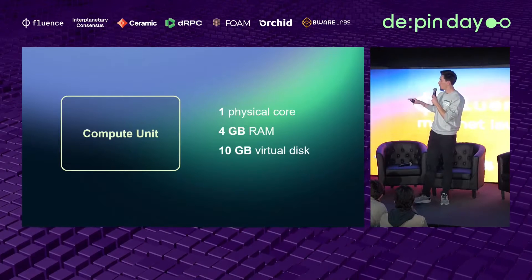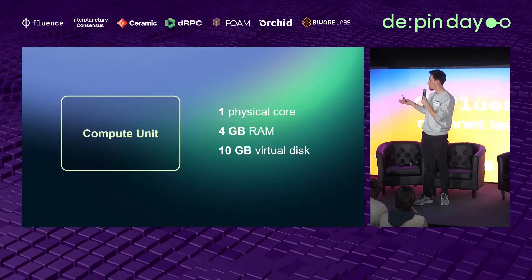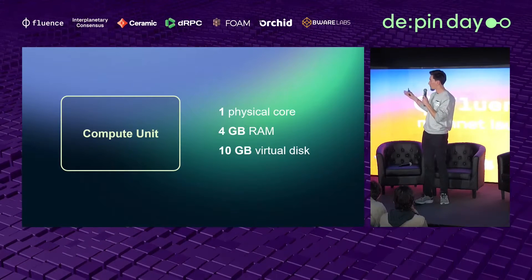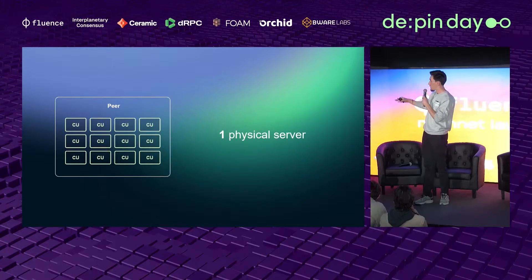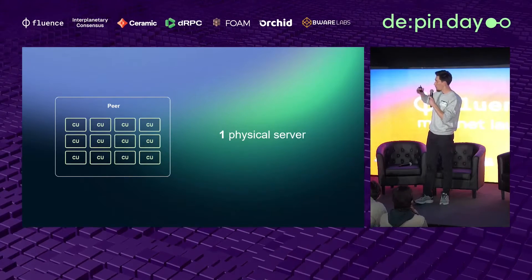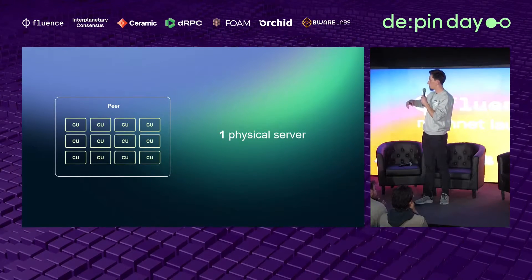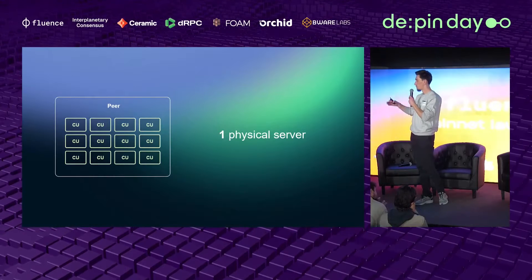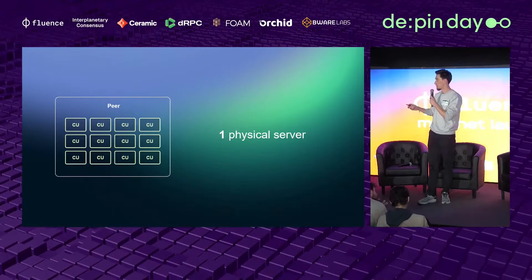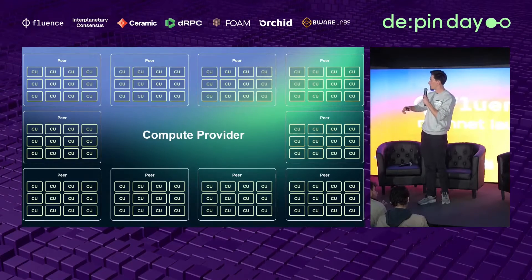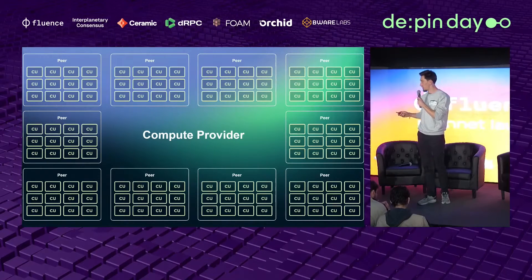The unit of accounting for compute resources is called a compute unit, which is one physical CPU core, four gigabytes of RAM, and ten gigabytes of virtual disk. Providers allocate such compute units in their physical machines and servers. They run many servers, and we recommend one Fluence node per physical machine. So compute providers basically have many such compute units across their physical infrastructure.